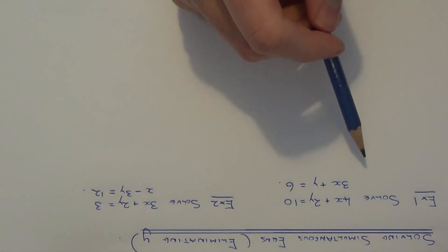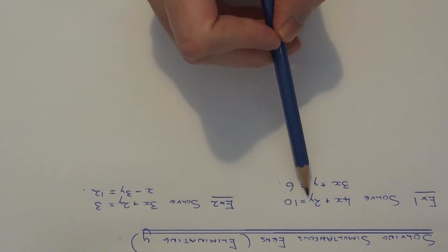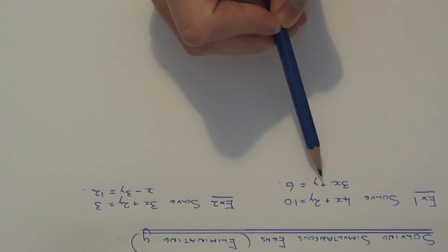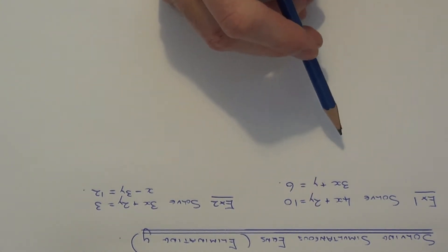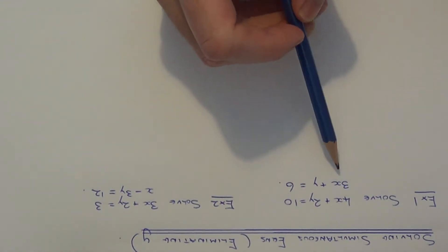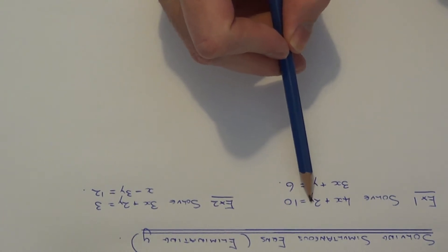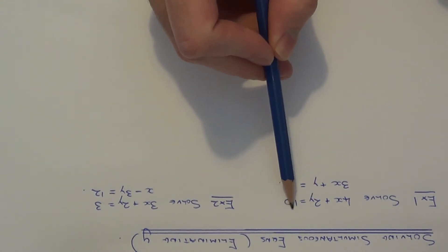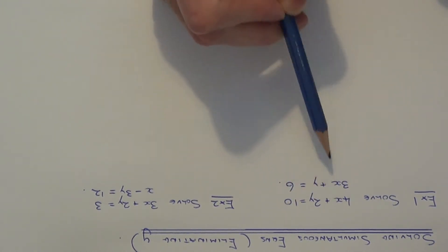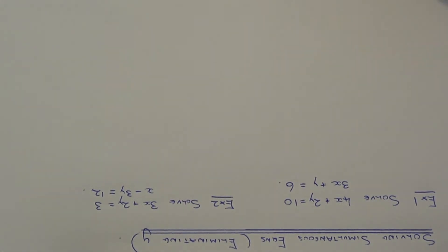Today I want to show you how to solve a pair of simultaneous equations by eliminating the y terms. Remember, if you have to solve simultaneous equations, you need to work out the values of x and y which give you the numbers at the end in both equations. So let's begin with example one.